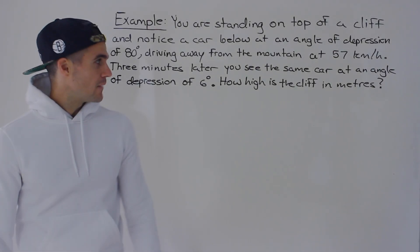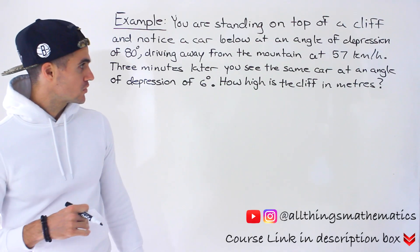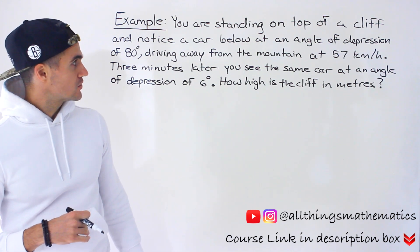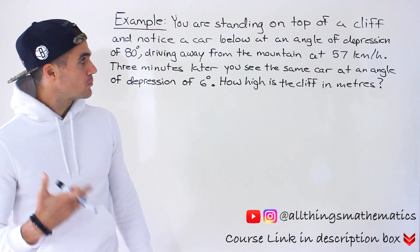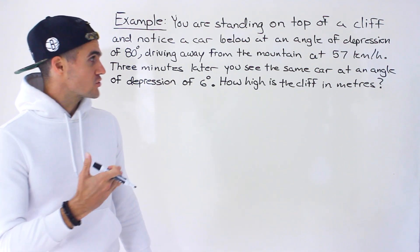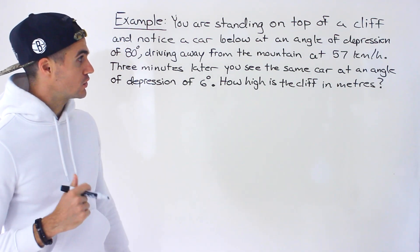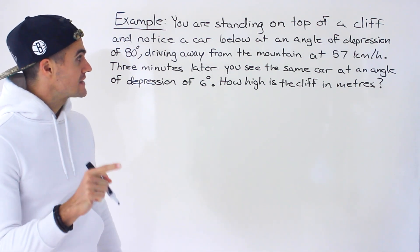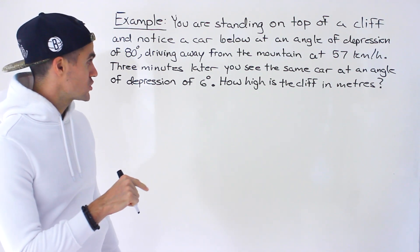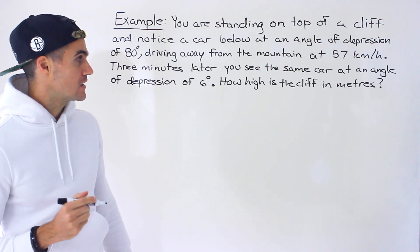What's up everyone, Patrick here. Welcome back. Moving on to another question dealing with trigonometry with right angles — another word problem. You are standing on top of a cliff and notice a car below at an angle of depression of 80 degrees, and that car is driving away from the mountain at 57 kilometers per hour. Three minutes later you see the same car at an angle of depression of six degrees. How high is the cliff in meters?